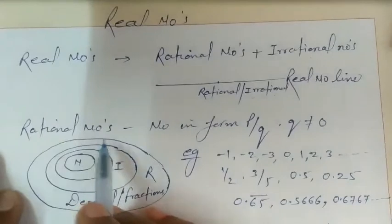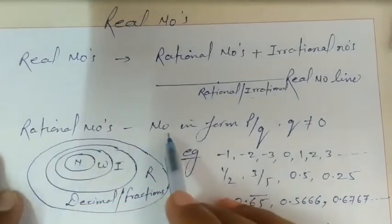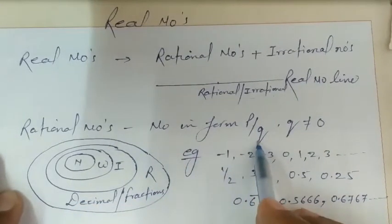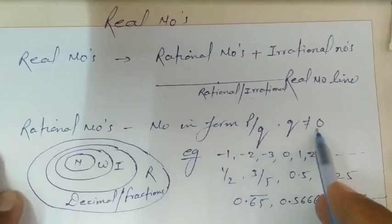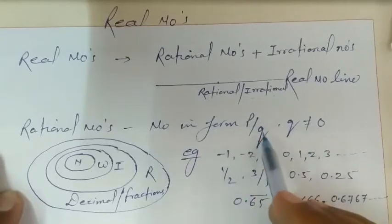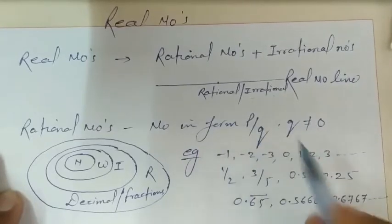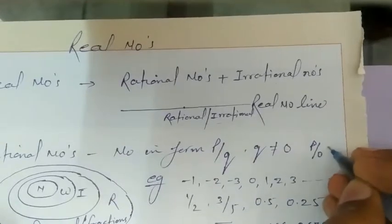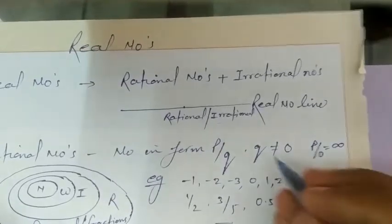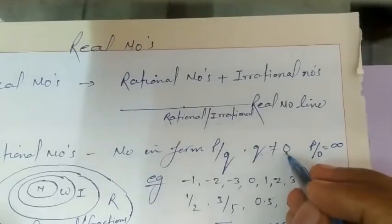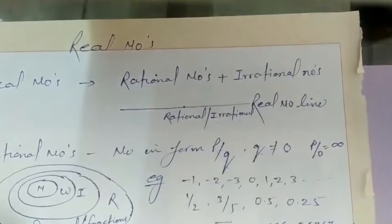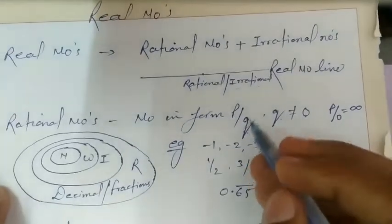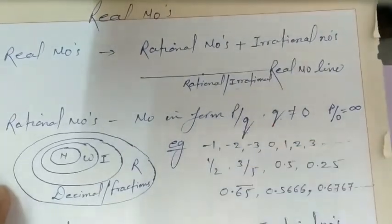Rational numbers are the numbers which are in the form of P upon Q, where Q can never be equal to 0, because if you put Q equals to 0, then this is not defined. That's why Q can never be equal to 0 in the form P upon Q. All numbers in the form P upon Q will be rational numbers.